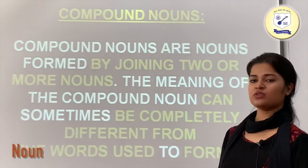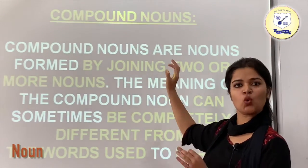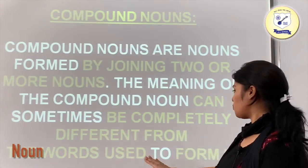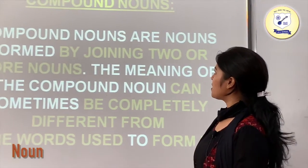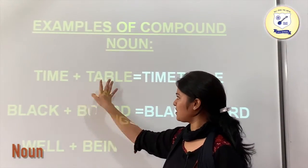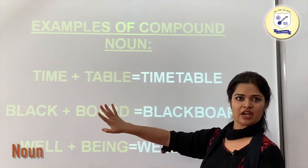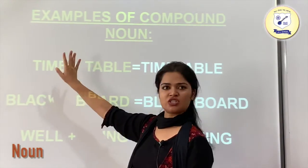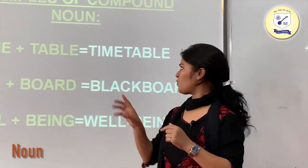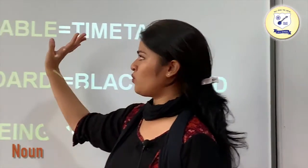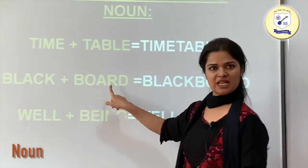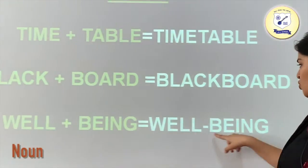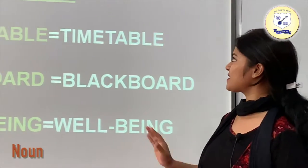Now we have compound nouns. Compound nouns are nouns formed by joining two or more nouns. The meaning of a compound noun can sometimes be completely different from the words used to form it. For example, time plus table gives timetable, which is different from either word. Black plus boat gives blackboat. Well plus being gives wellbeing. These are examples of compound nouns.